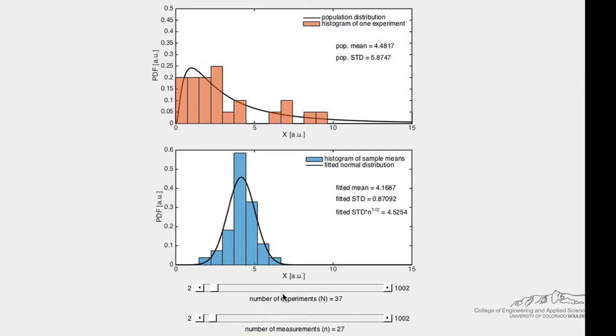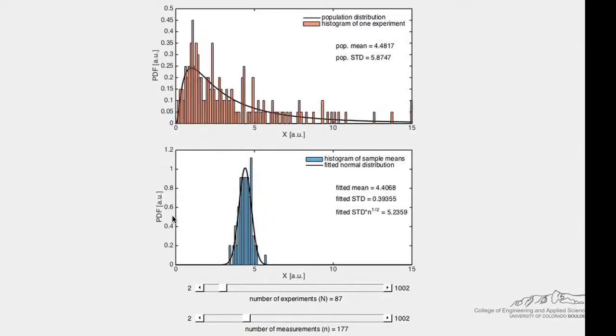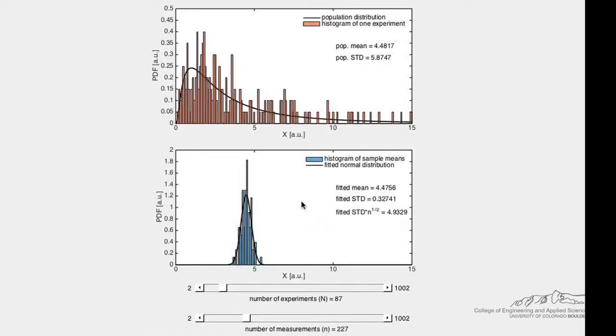We can define the number of experiments and the number of measurements with the slider bar, and we can clearly see that when the number of measurements is greater than 30, the means of these measurements from each experiment follow a normal distribution as suggested by the central limit theorem.